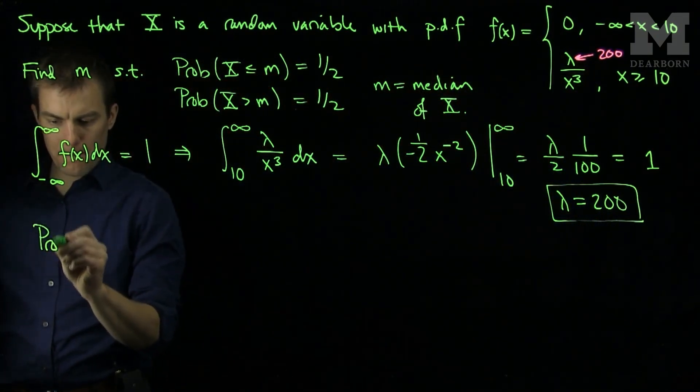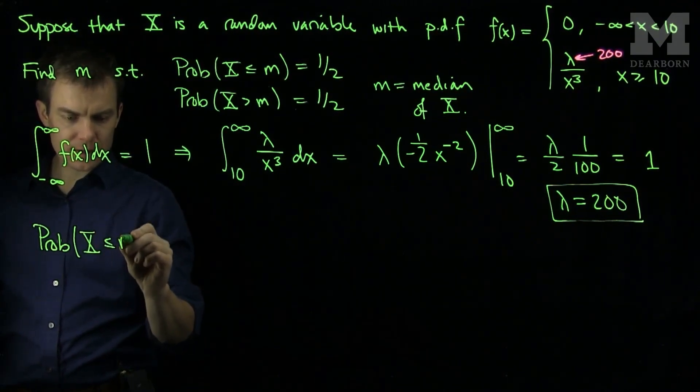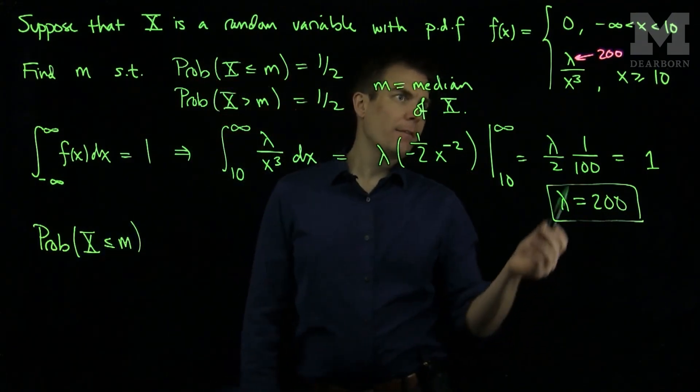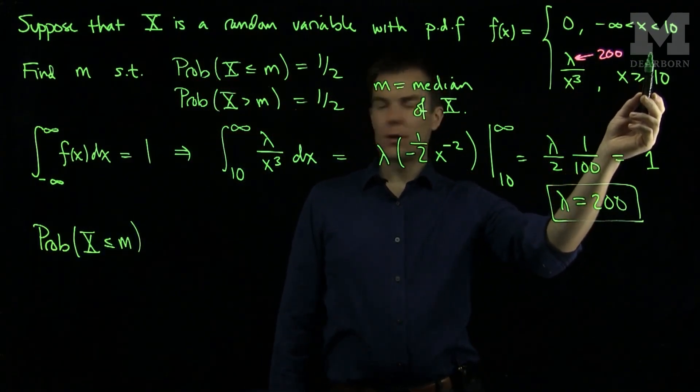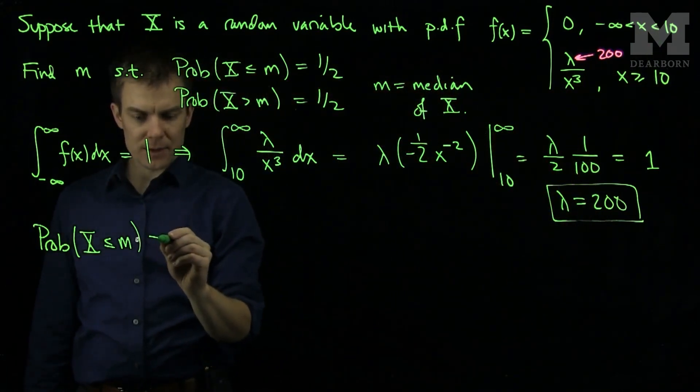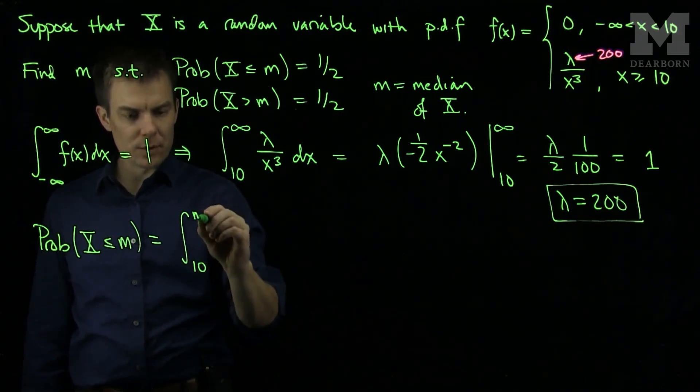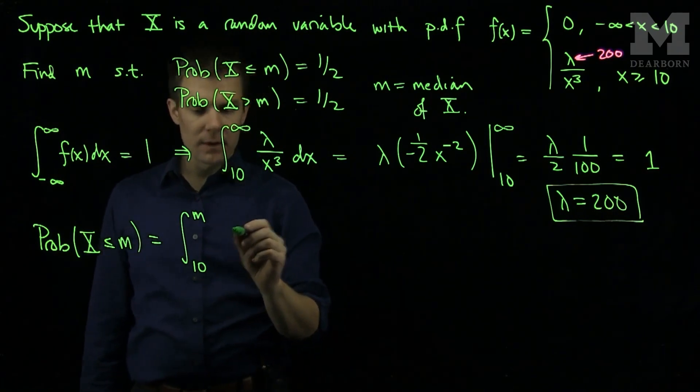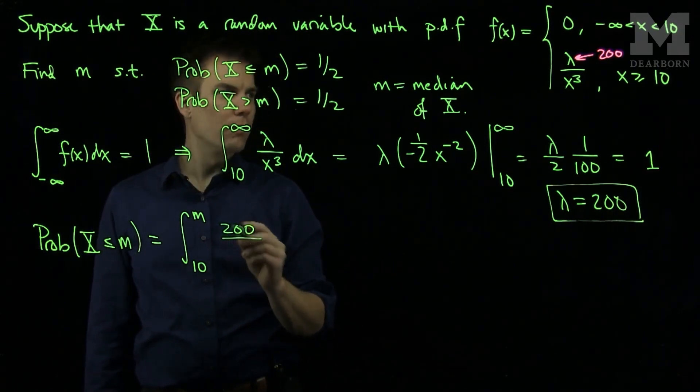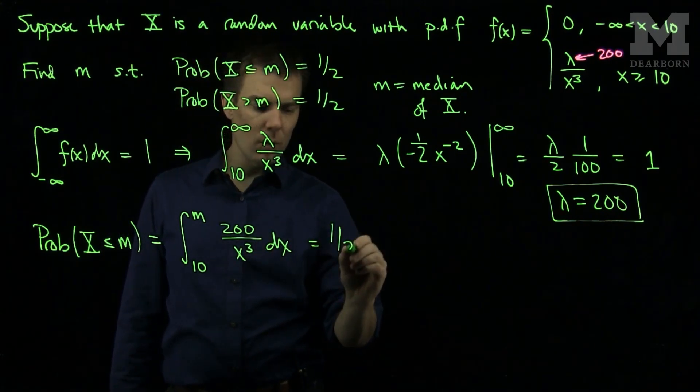The probability that x is less than or equal to m, we want this to be equal to 1 half, so I cannot plug in any value that is lower than 10. So this will be the integral from 10 up to m of lambda, which we know to be 200, over x cubed dx. This has to be 1 half.